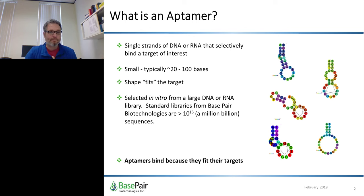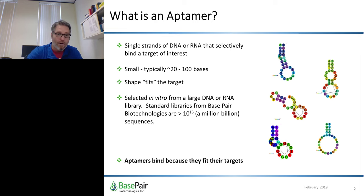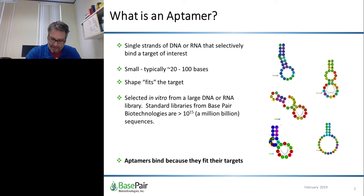So just what is an aptamer? The term aptamer simply means a part that fits. Aptamers are typically small and interact in all the same ways most biomolecules interact — van der Waals interactions, hydrogen bonding, salt bridges, pi stacking, etc. Aptamers are selected by an in vitro process from large combinatorial libraries of over 10 to the 15th single-stranded nucleic acids.